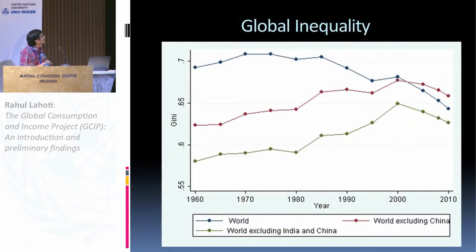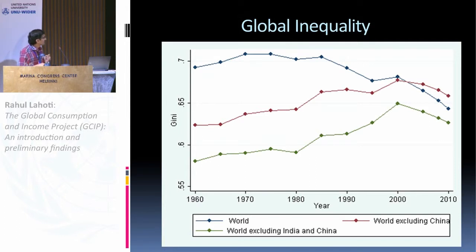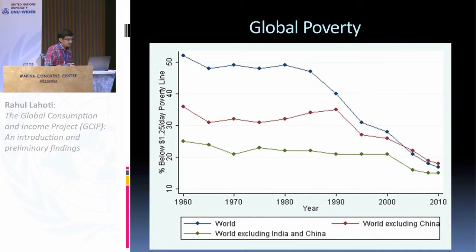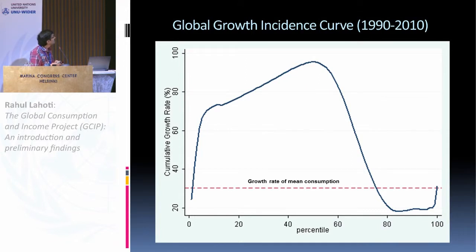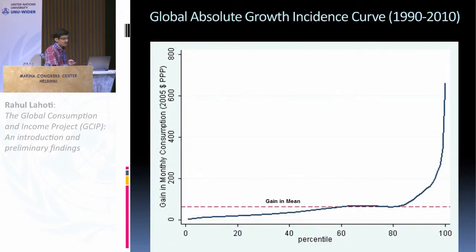Global inequality has declined from the 80s and 90s when it was in the 0.7 range to around 0.63 now. But excluding China the pattern looks different — it increased until 2000 and then declined. Excluding India doesn't make that much of a difference. These are relative measures of inequality, which might change with different measures. Global poverty has also declined dramatically, but removing China doesn't show as dramatic a decline. The global growth incidence curves plotting cumulative growth rates show the median has almost doubled over 1990 to 2010 — this is where the Chinese population sits in the global median — while the top, which is the developed country population, is stagnating. In absolute terms, the gains in lower percentiles are still lower than those at the top.